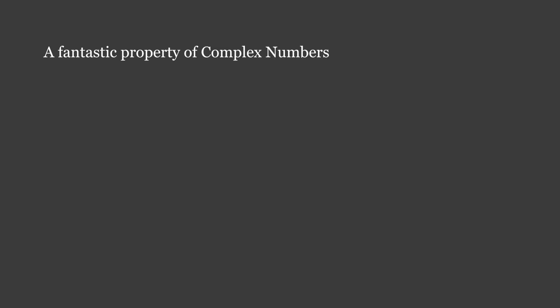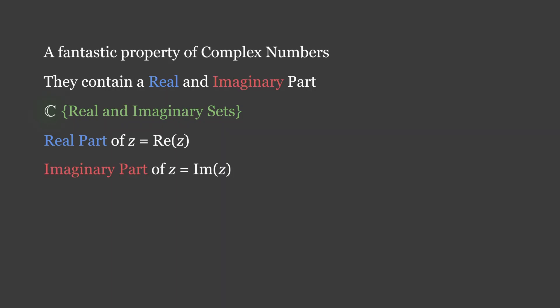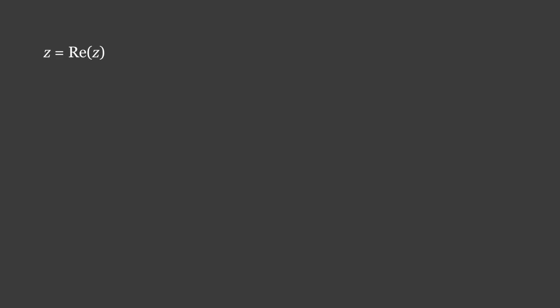A fantastic property of the complex numbers is that they contain a real and imaginary part, as the complex set includes both the real and imaginary sets. We denote the real part of a complex number z as Re(z), and the imaginary part of z as Im(z). To write z in terms of its parts, we can combine its real and imaginary values into an equation: z equals Re(z) plus Im(z)i.